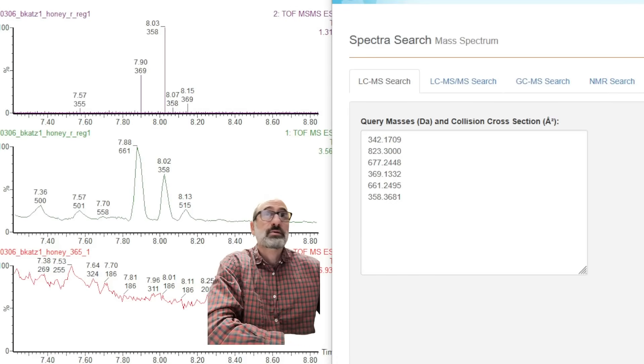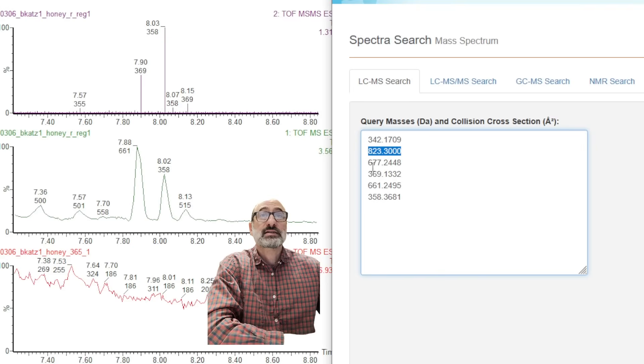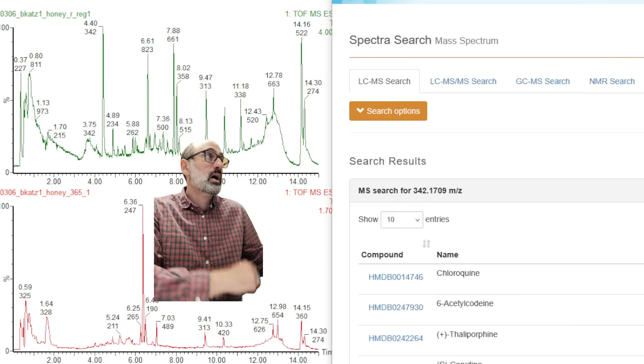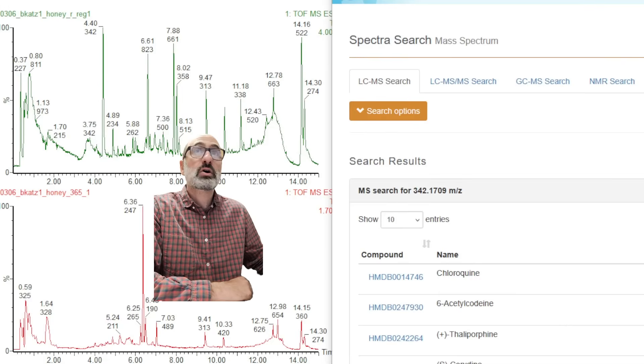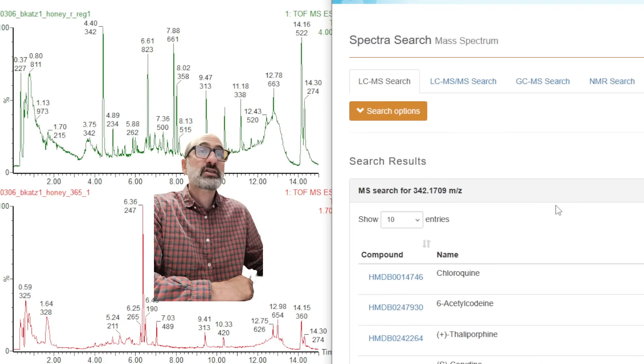All right. So here are the HMDB masses I'm going to search. We have the 342 mass. We have this 823 mass, this 677 mass. All right. Here we go. HMDB results. So again, we got the 342 is the first major adulteration peak in this royal honey.